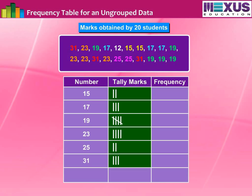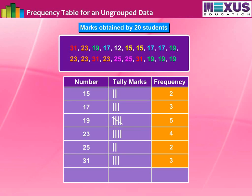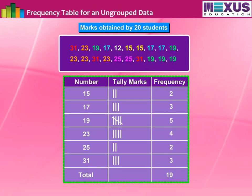Add the tally marks against the numbers and write the total in the corresponding frequency column. Now add all the numbers under the frequency column and write it against the total. Hence a frequency table is prepared for ungrouped data.